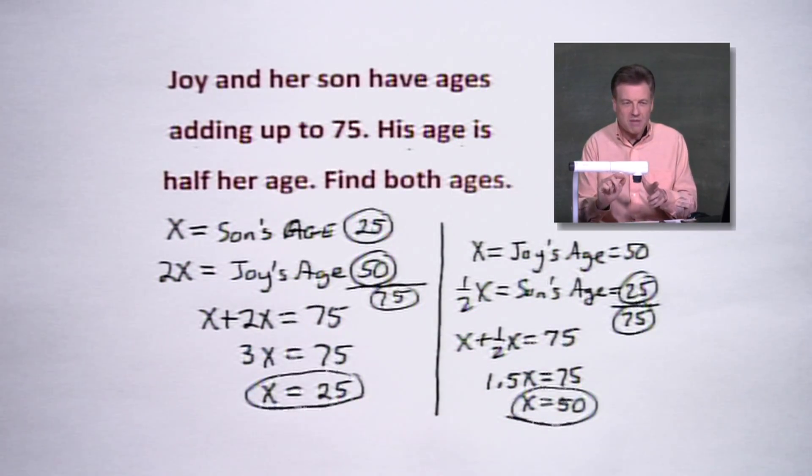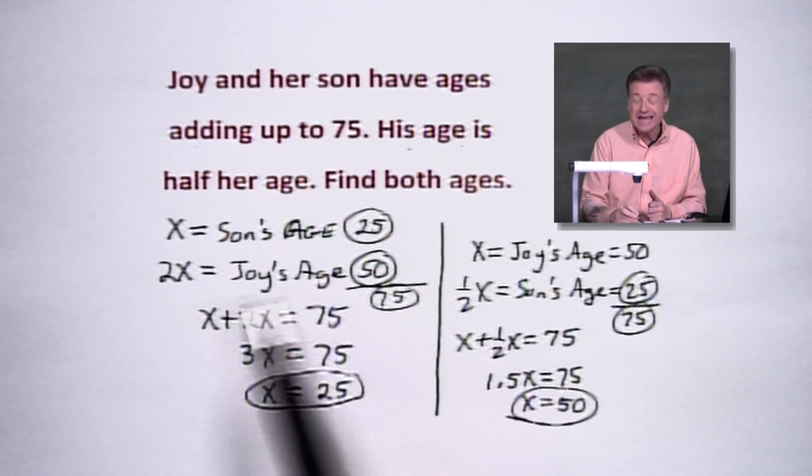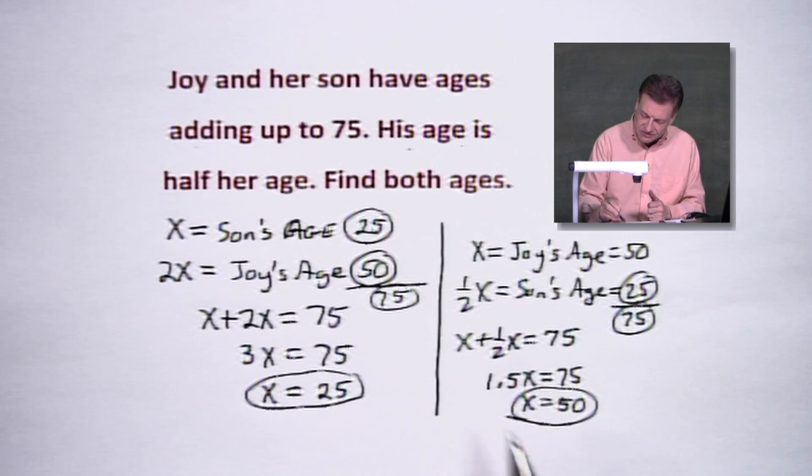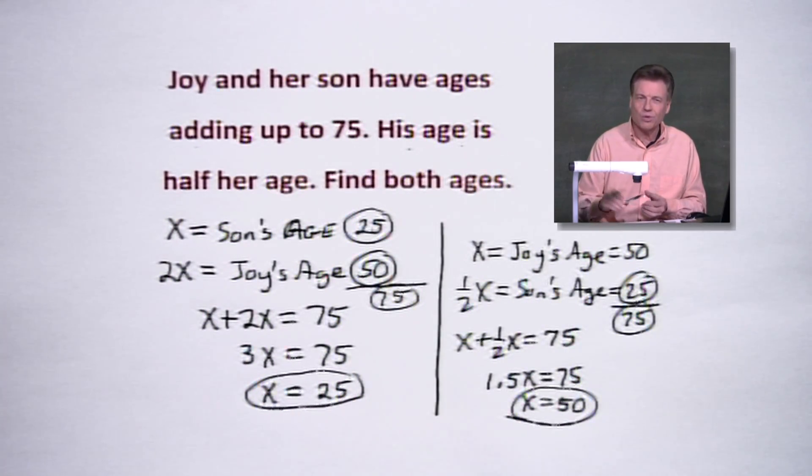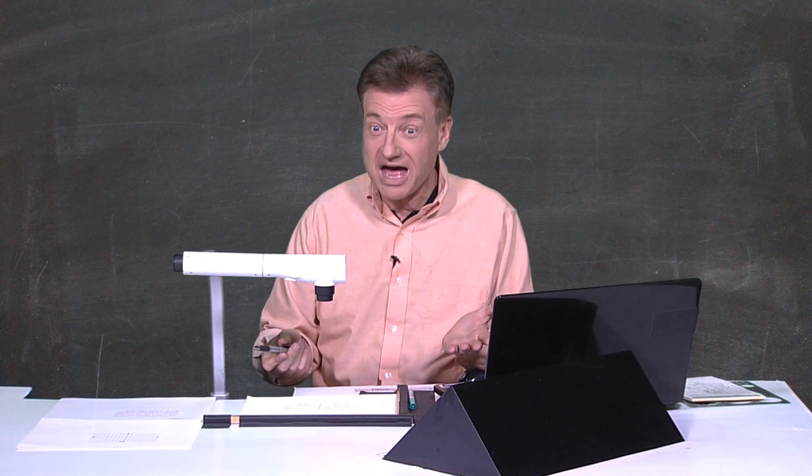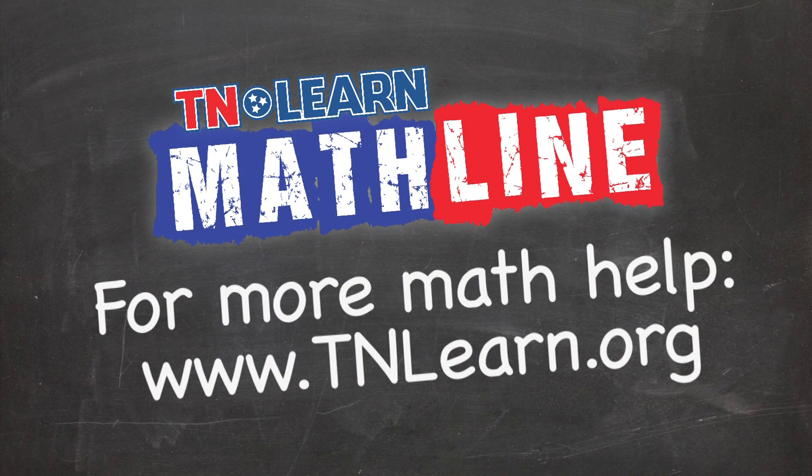I like problems of the day that we can set up two different ways like that. So there you go. Which one do you like? I personally like to avoid the fractions. But you know, since this one wasn't so bad, 1 and a half isn't that hard to deal with either. Would have worked out. And of course, hit a calculator if you struggle with those. It comes out nice and easy. So 25, 50, there you go. For more math help, visit tnlearn.org.